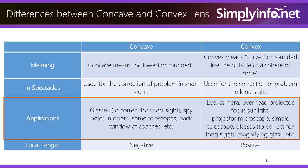Concave lens uses include: glasses to correct for short sight, spy holes in doors, some telescopes, back windows of coaches, etc.